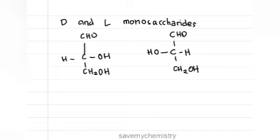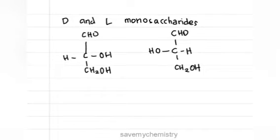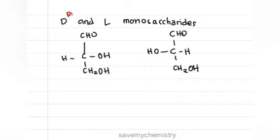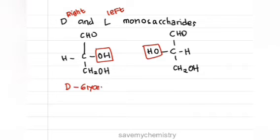Next is about D and L monosaccharides. D is dextro means right and L is levo means left. There are two structures. The first structure has OH group on the right side and the second structure has OH group on the left side. So the name of that structure is D-glyceraldehyde and L-glyceraldehyde. It depends on the deposition of OH.